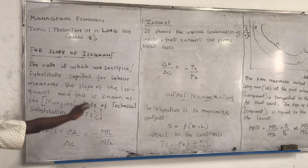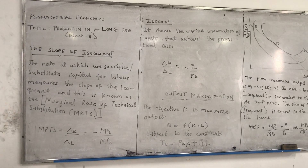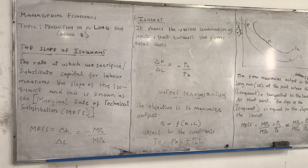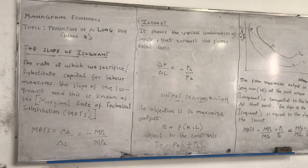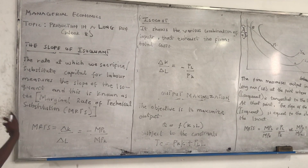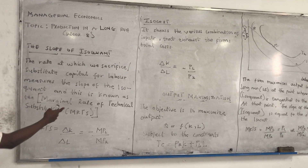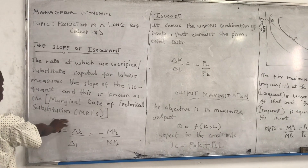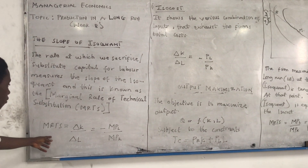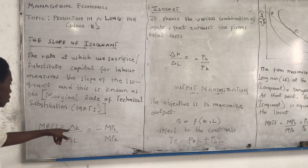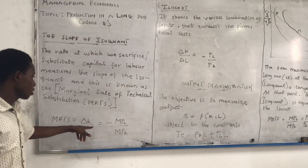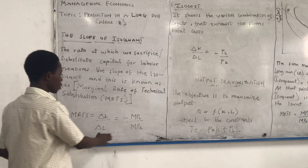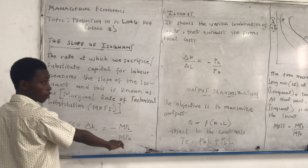We also have the slope of isoquants. The rate at which we sacrifice or substitute capital for labor measures the slope of the isoquant. This is known as the Marginal Rate of Technical Substitution (MRTS), which is given by: change in K over change in L, also called the negative marginal product of capital over marginal product of labor.